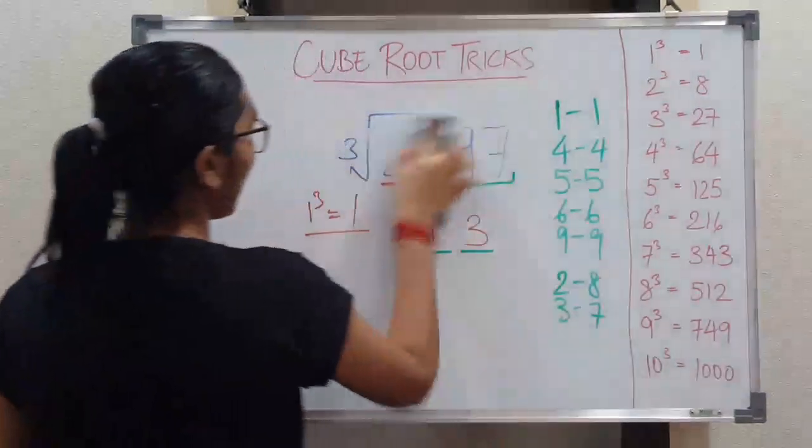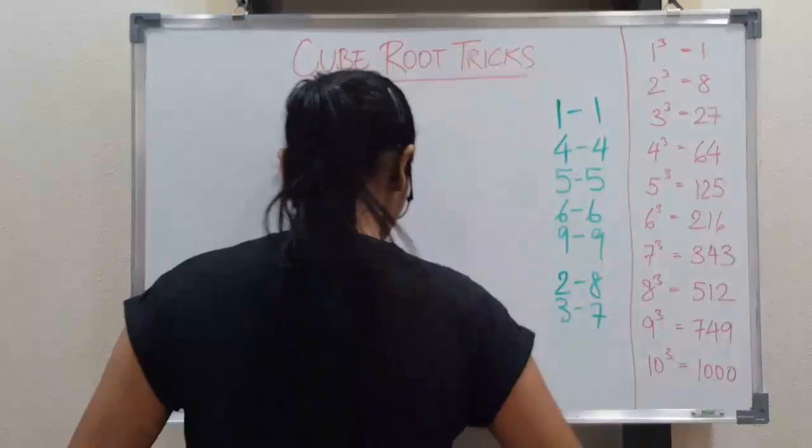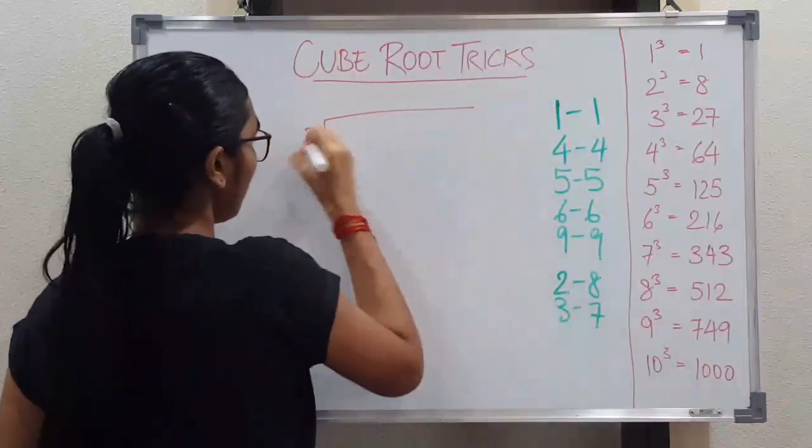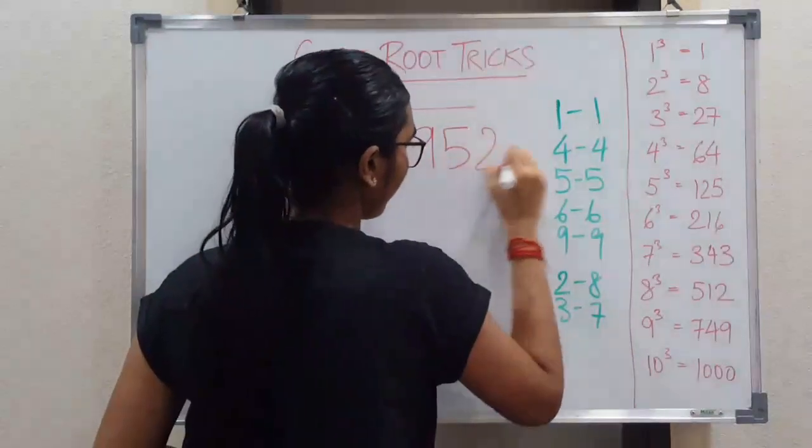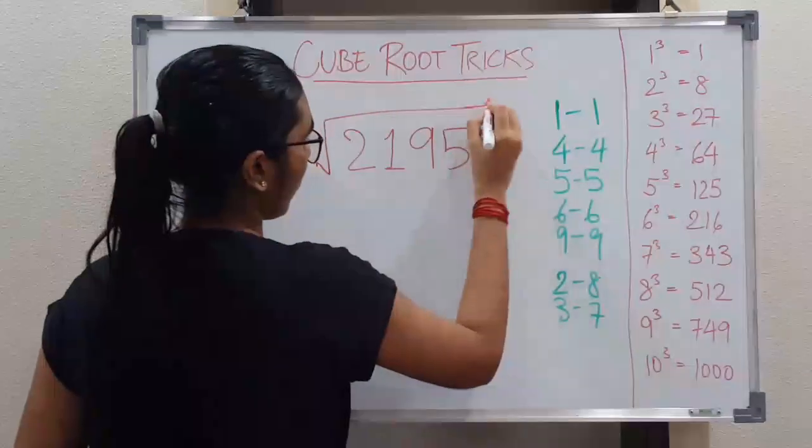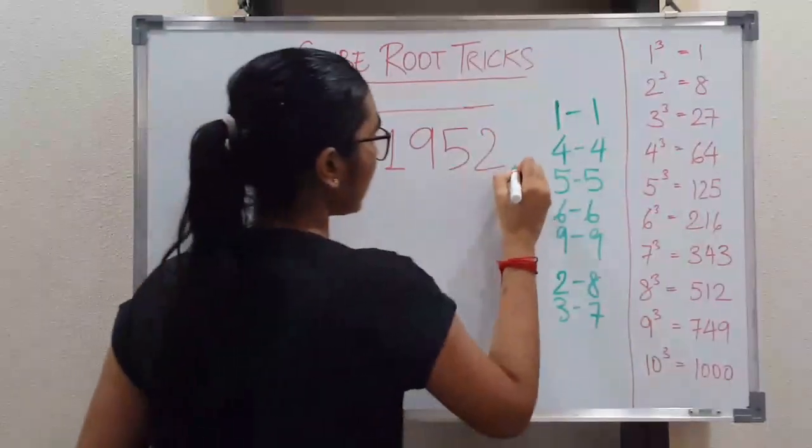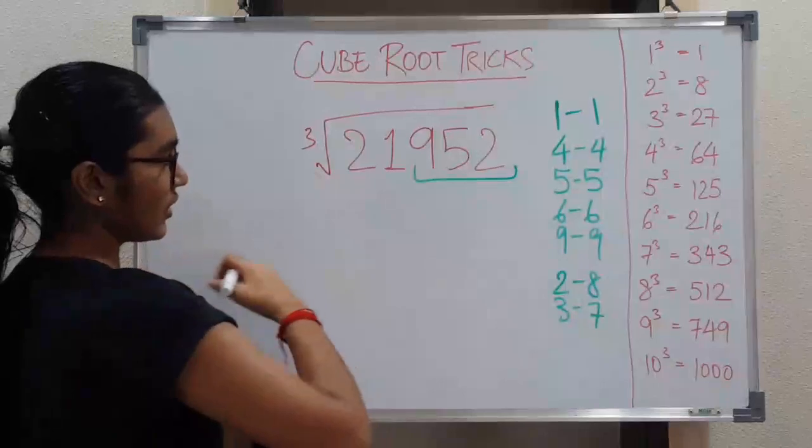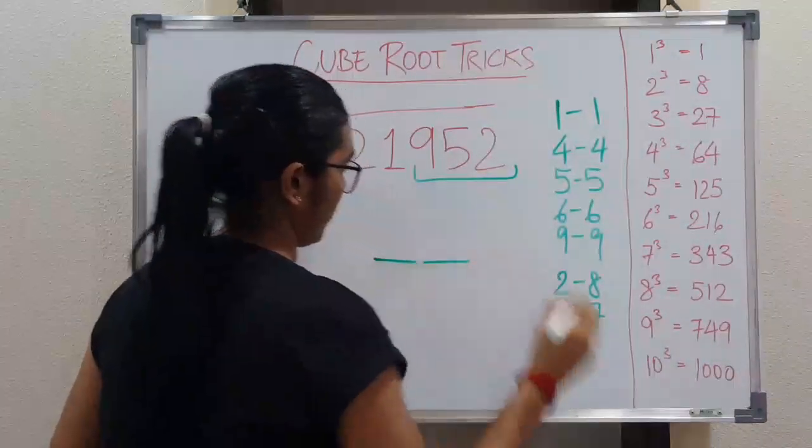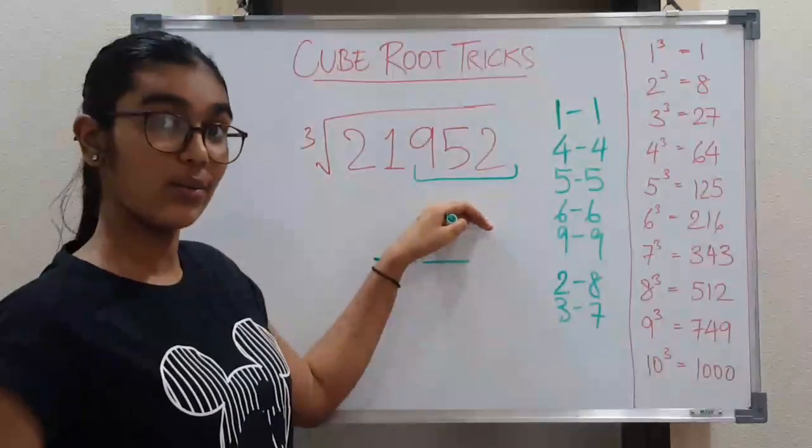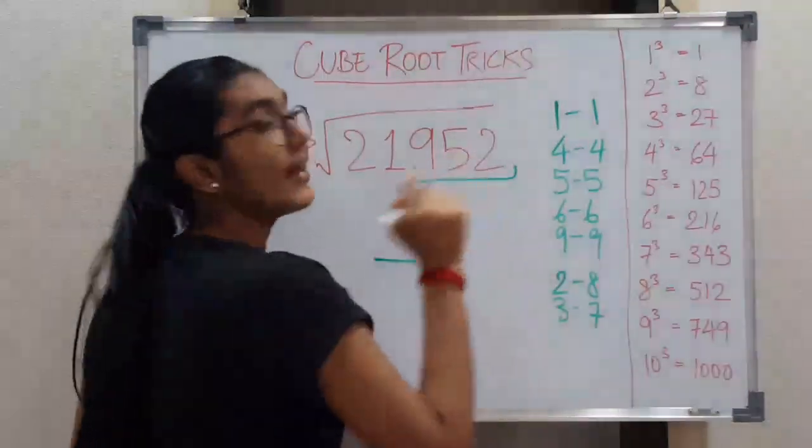So now we are going to look at another example. Here I am taking the number 21952. So now I told you what is the first trick. You need to take these three numbers in one bracket and exclude the rest numbers. From these three numbers, we need to find what cube number ends at 2.